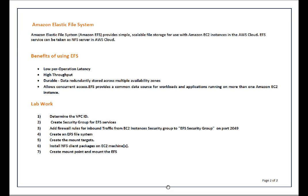In the lab setup, first we will create a security group, or firewall group, for EFS services. Later we will add a rule to allow traffic on port 2049, which is the default NFS communication port. Then we will create one EFS file system and configure mount targets — specifying which subnets can access the file system. At the end we will install NFS client packages on an EC2 instance and mount the EFS file system to validate our lab setup.